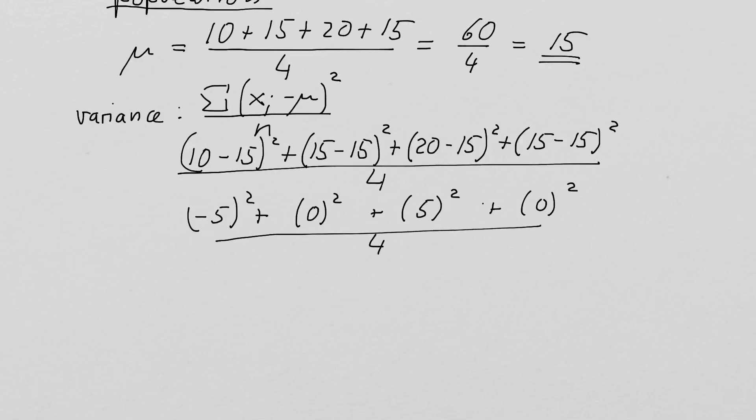So negative 5 squared gives us 25, plus 0 plus 25, plus 0 divided by 4 equals 12.5. So our variance for these four observations is 12.5.